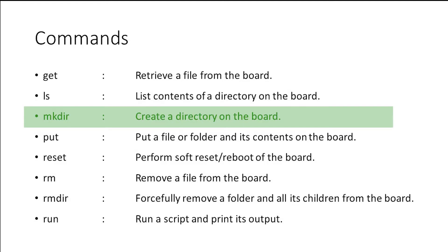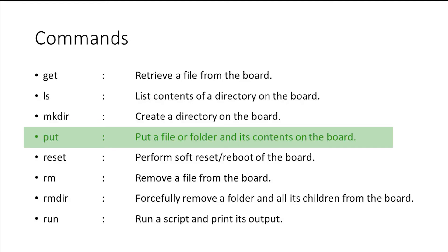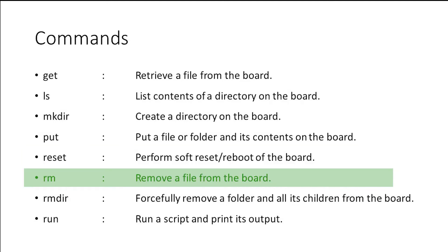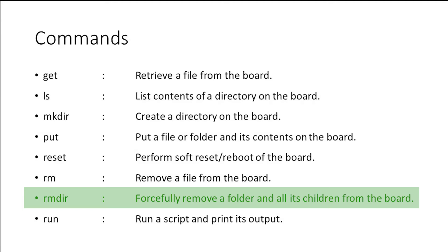Next is mkdir — make directory. You can use this command to create a directory inside the board. The put command will help us copy a file from our computer to the ESP8266 module, so we can copy our locally made Python script into the module. After copying a Python script to the module, we can use the reset command to reset the module so it starts running the newly copied script. The rm command will help us remove a file from the ESP module, and rmdir will help us remove a directory.